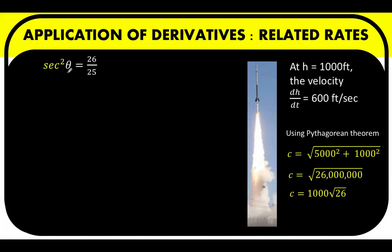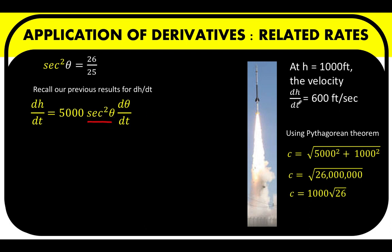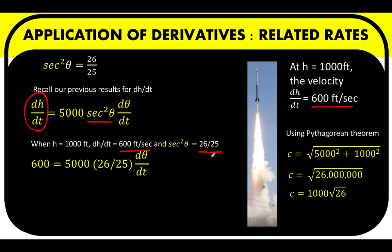So using now this value for secant squared theta, substituting that value to this secant squared theta, when dh over dt or the velocity equals 600 feet per second, we can now replace this dh over dt by 600 feet per second. We can now replace this secant squared theta by 26 over 25. And so we arrive at this result.